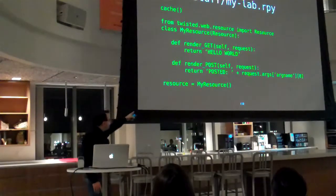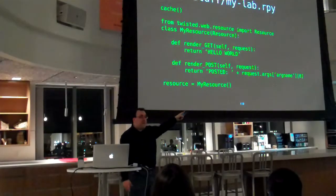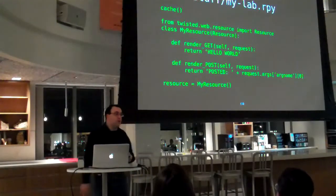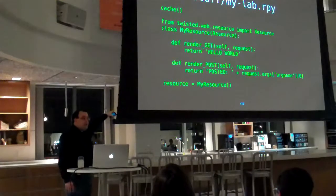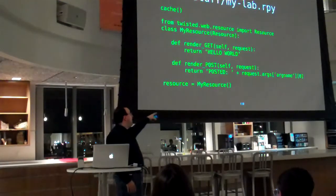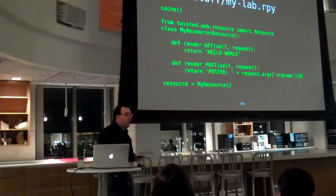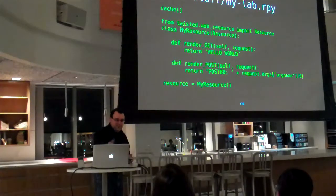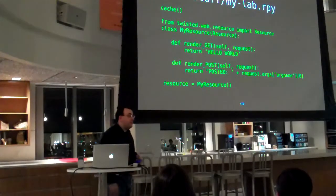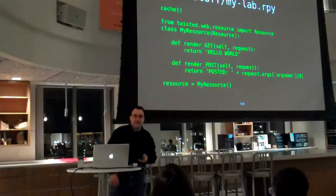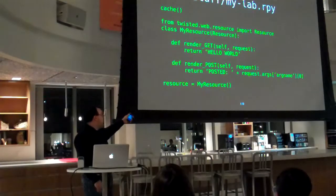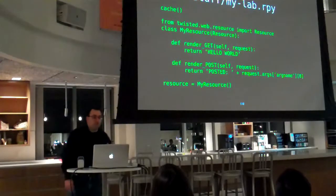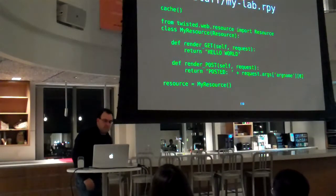In the second example, you can see in the render-post method there's a request.args attribute, which is where any form components will go after being parsed. That's where you can get your arguments if you have an HTML form. The bottom line is really important: this is an RPY, not a PY, which means it must have a variable named 'resource' in global scope, because when you go to — for example, if your file is my-lab.rpy — that object is what is going to be rendered. So make sure you instantiate whatever resource you create and assign it to the name 'resource', lowercase. That's very specific and special.